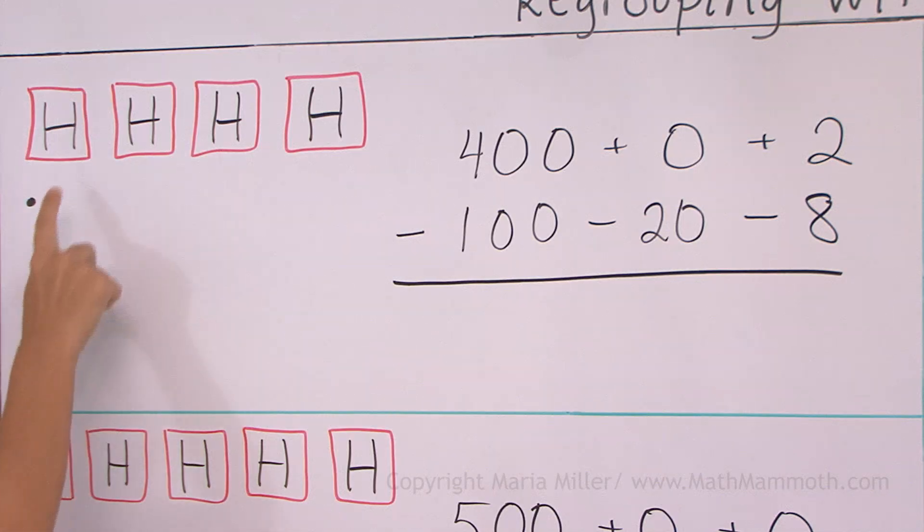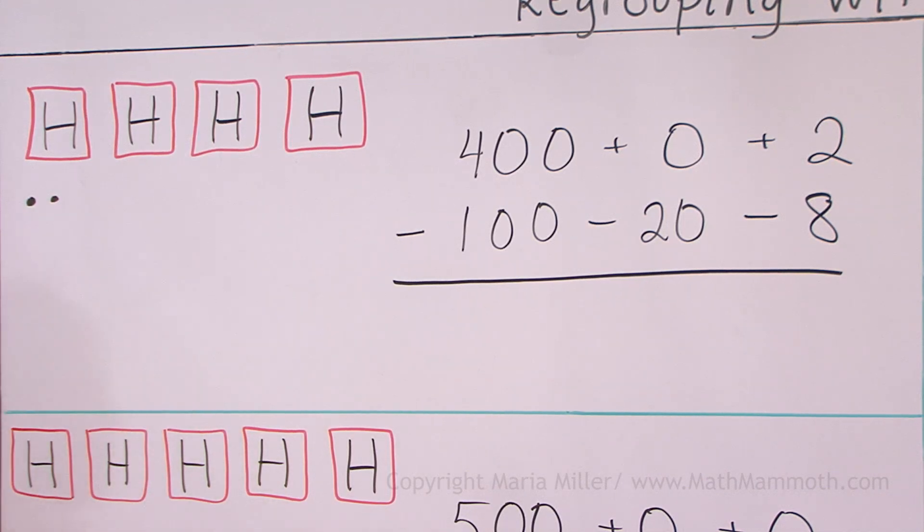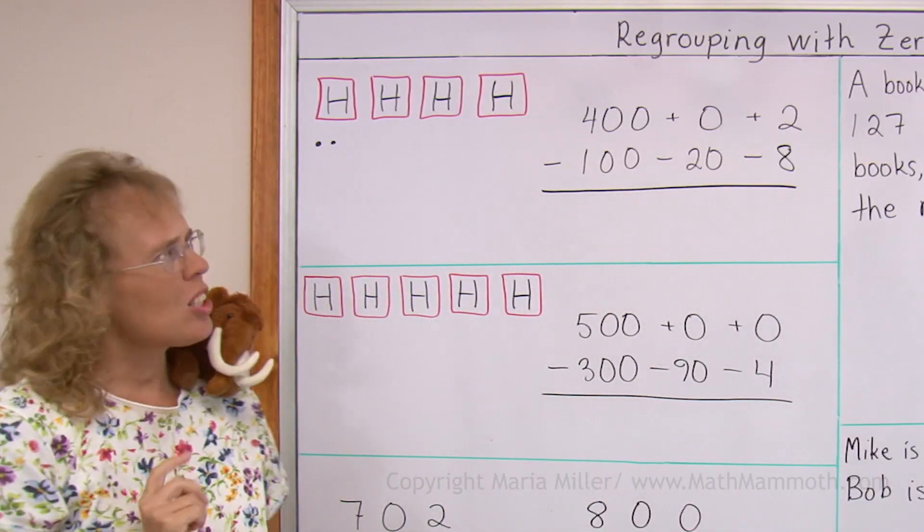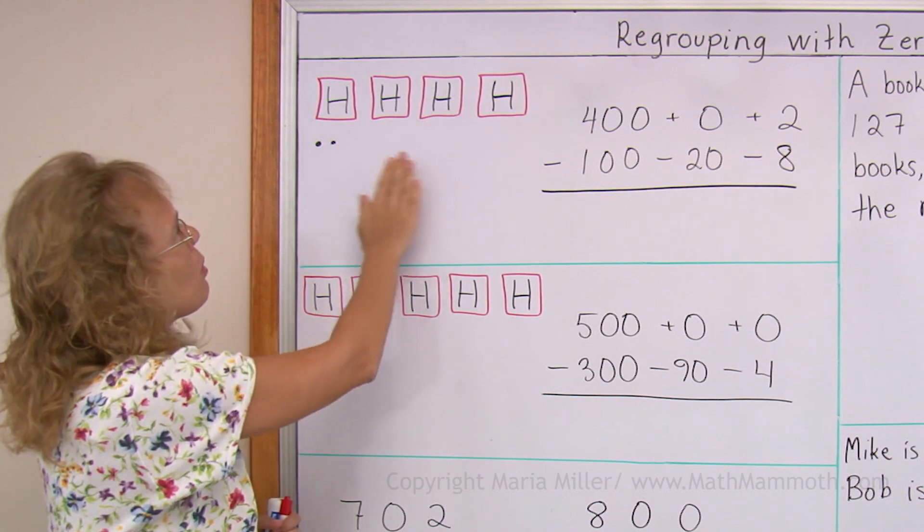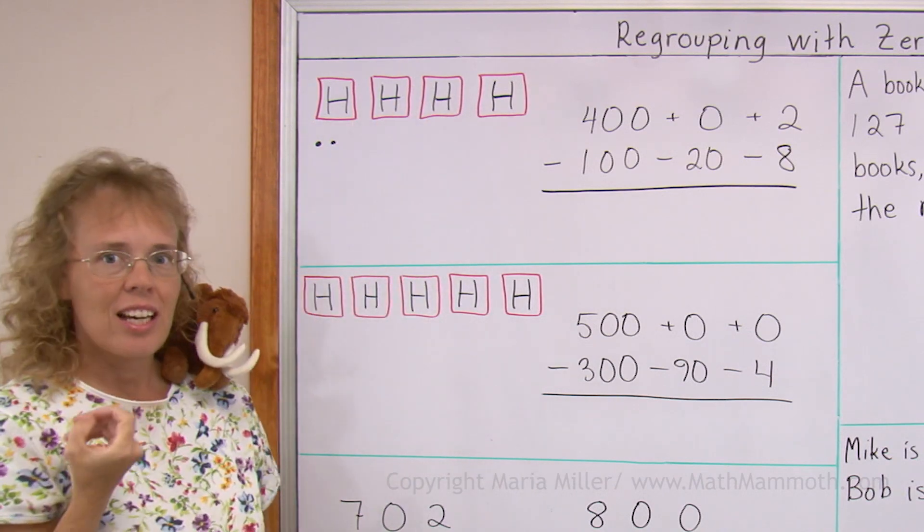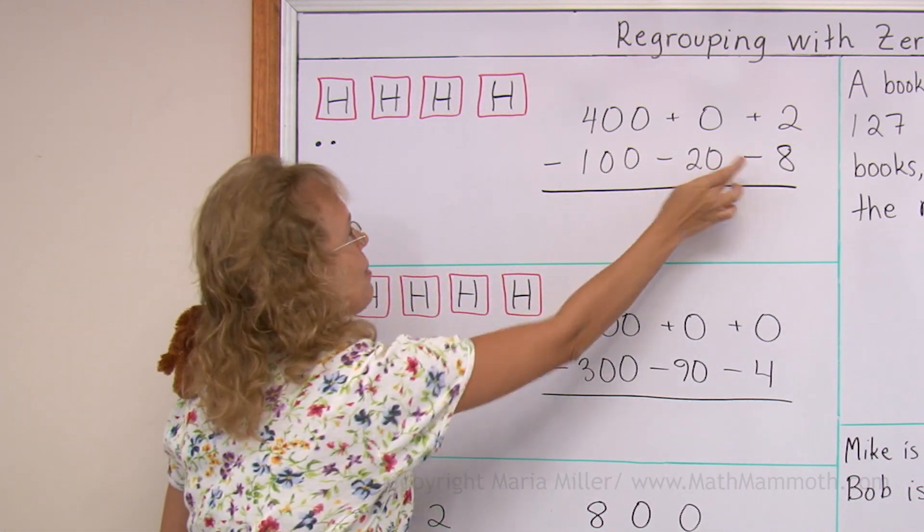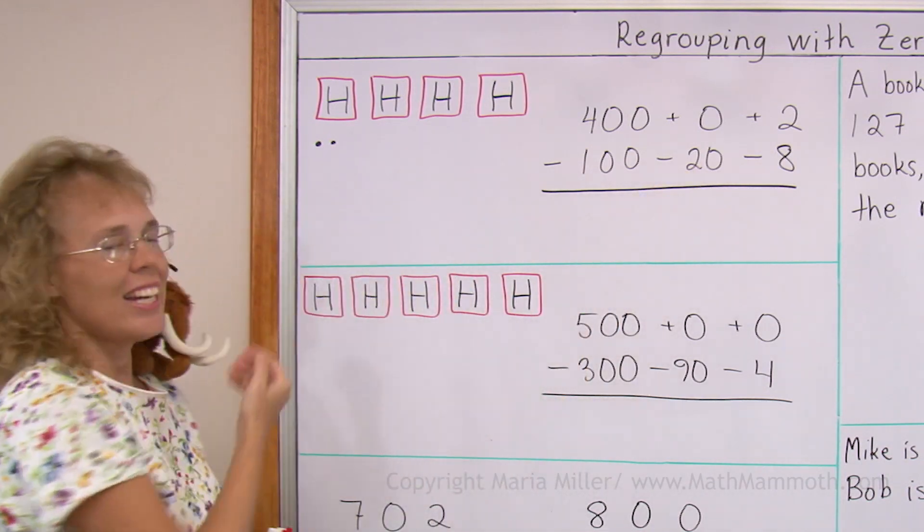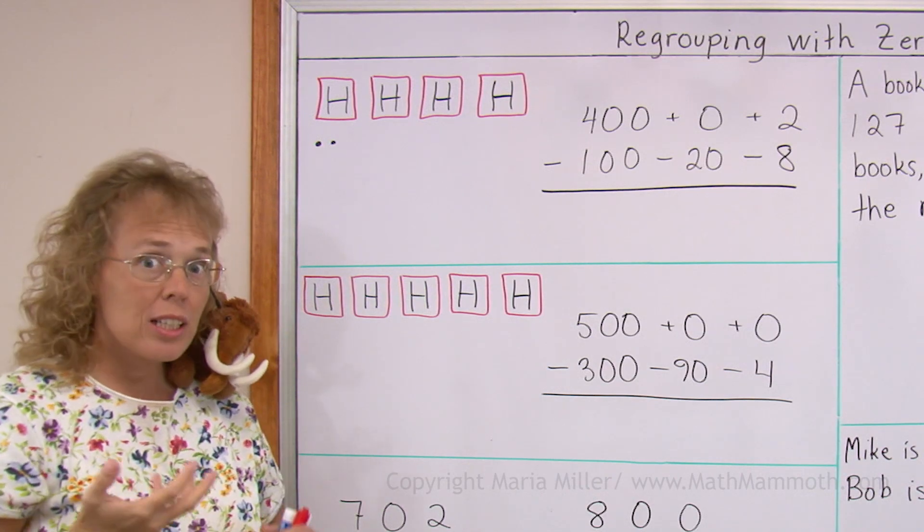Now let's say we have 402. We need to subtract 128. So how do we do that? If you look at this model here, these pictures, I cannot subtract 8, that's not enough. I cannot subtract 20 because I don't have any tens. So what do I do?